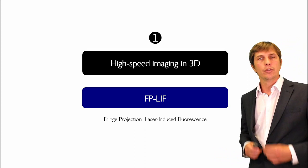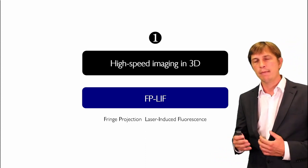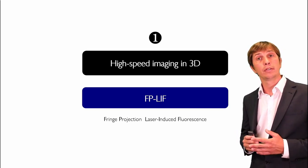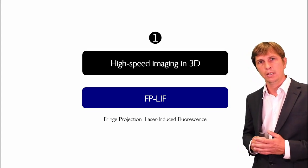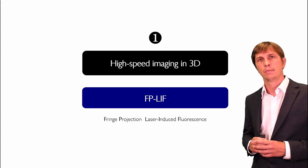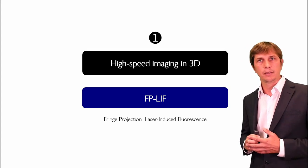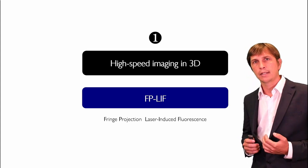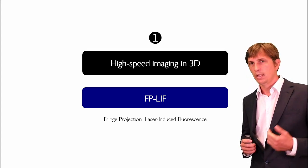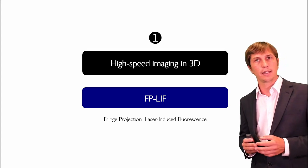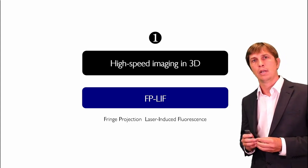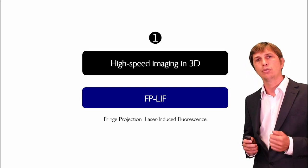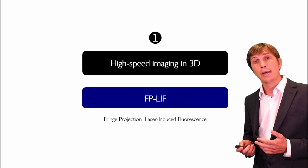The spray system contains numerous liquid bodies of different shapes and sizes, such as ligaments and liquid sheets. What can be very relevant is to extract in 3D the surface deformation of such structures, especially if this is done at high speed. For example, one could study the growth of instabilities that are responsible for liquid break-up. I am going to show you a technique capable of doing this, called FP-LEAF, standing for Fringe Projection Laser Induced Fluorescence.